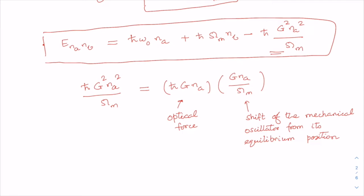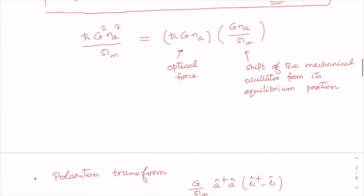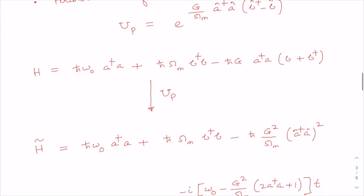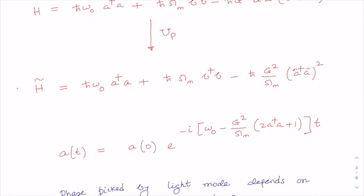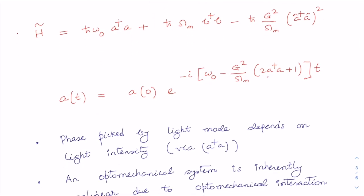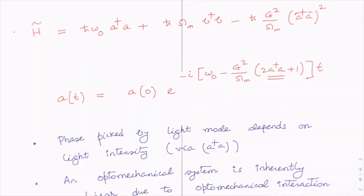We also learned how to apply the polariton transform. Using the polariton transform, the Hamiltonian can be converted into a different form, which tells us that the phase acquired by the light mode depends on the light intensity because of the presence of the term a†a, which is the photon number. So an optomechanical system is inherently non-linear due to the optomechanical interaction.